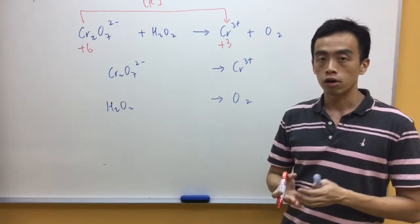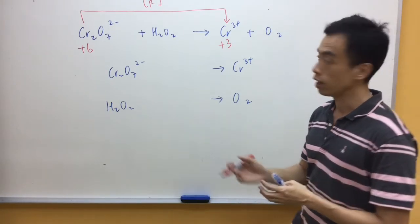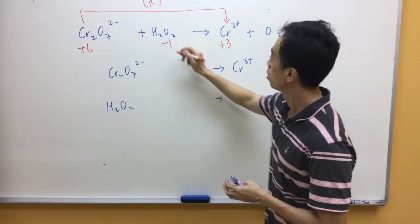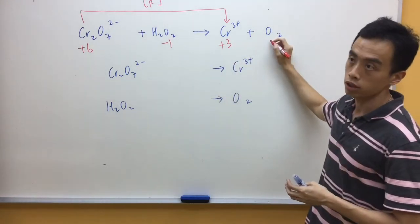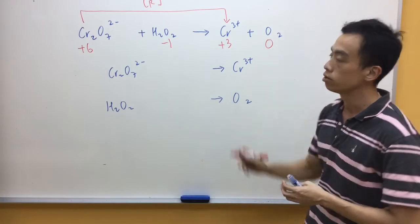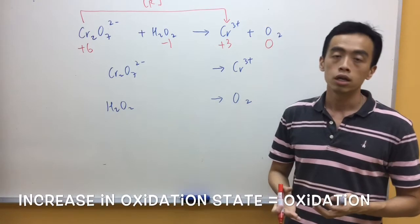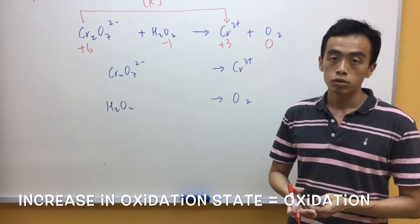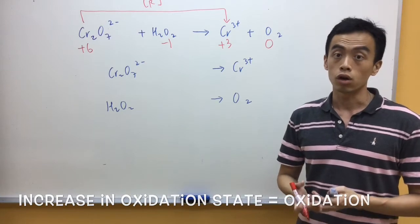Now the oxidation state for oxygen in H2O2 is -1, oxidation state for oxygen in the element is 0, so you'll notice there's an increase in oxidation state for oxygen, so therefore oxygen or H2O2 is oxidized.